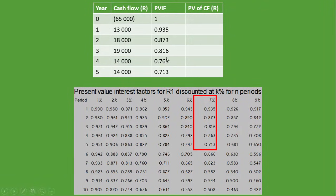We've plugged in all the PVIF values. For year 0, we put 1 because the investment is happening today and does not need discounting. From year 1, we want to know today's value of 13,000 rand received in one year. For year 2, we want today's value of 18,000 rand received in two years. That's why we have the present value interest factor.